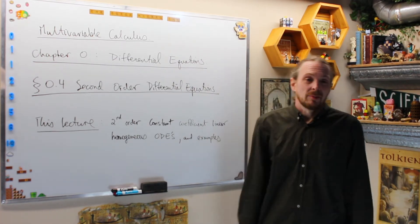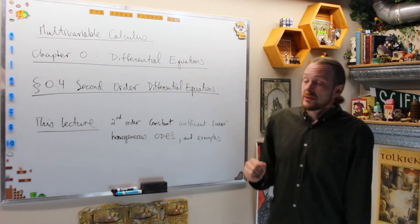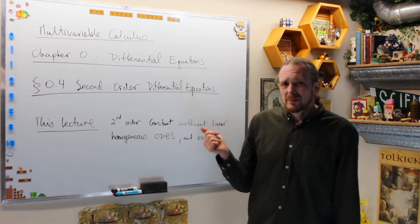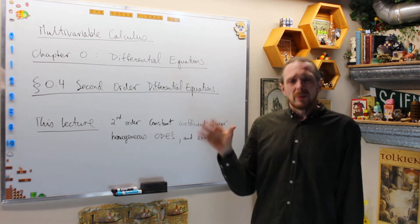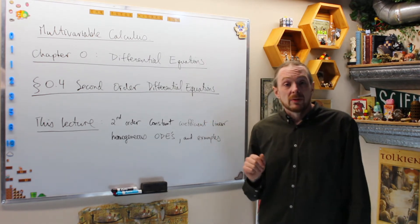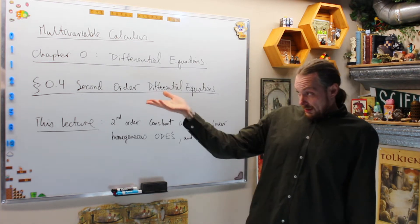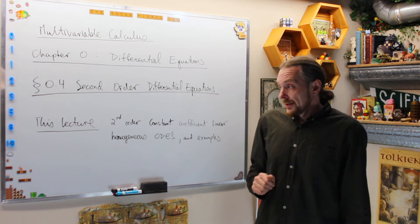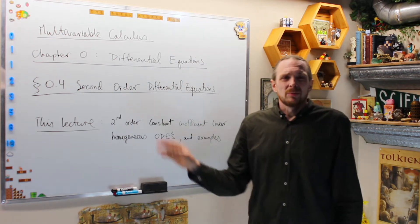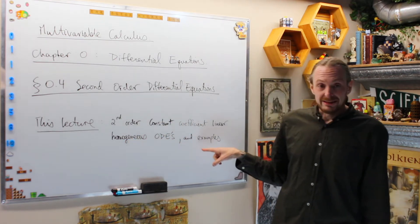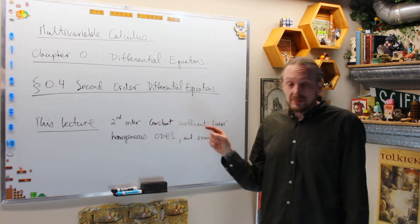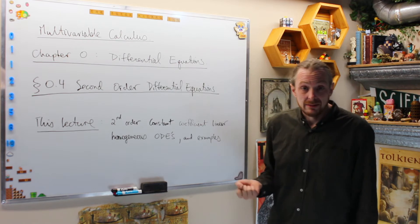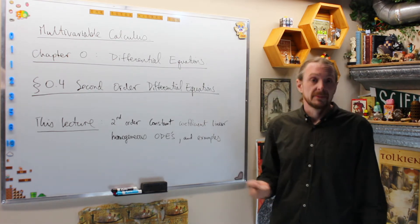This is the multivariable calculus series. We're in chapter 0, differential equations. This will be the last section we do in a multivariable calculus course. We just wanted the basic idea of what differential equations are, so we're going to do second order differential equations in section 0.4. This lecture specifically will deal with all the terminology of this: second order constant coefficient linear homogeneous ordinary differential equations — and some examples.